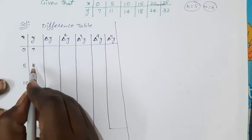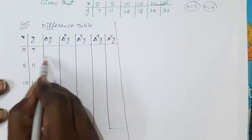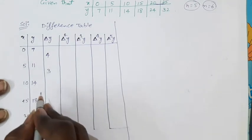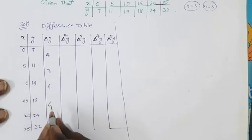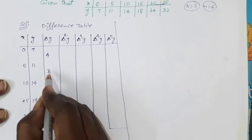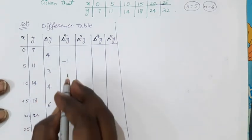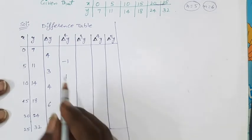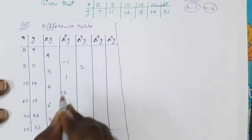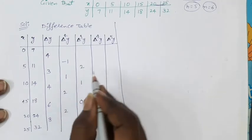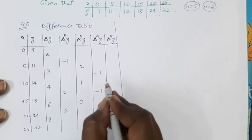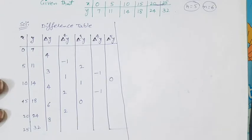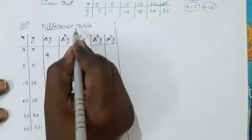Subtracting each value from the one below: 11−7=4, 14−11=3, 18−14=4, 24−18=6, 32−24=8. Second differences: 3−4=−1, 4−3=1, 6−4=2, 8−6=2. Third differences: 1−(−1)=2, 2−1=1, 2−2=0. Fourth differences: 1−2=−1, 0−1=−1. Fifth difference: −1−(−1)=0.